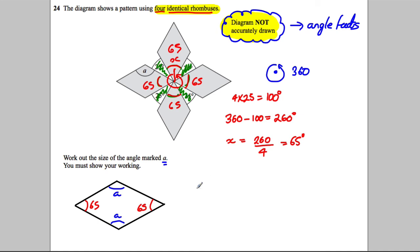So we've got two a's add 65 and 65, which is 130, and that must add up to 360. Therefore, how do we find a? 2a must be 360 take away 130, which is going to be equal to 230. So 2a is 230.